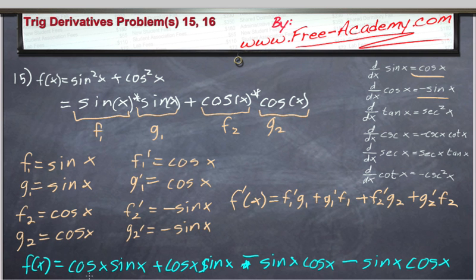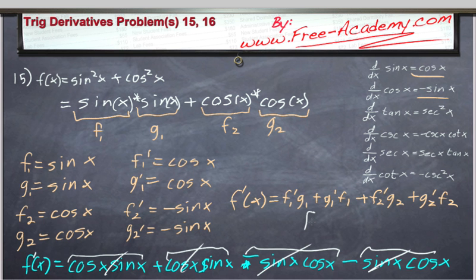Now take a look at what we have here. We have cosine x sine x minus sine x cosine x - those cancel. And then cosine x sine x minus sine x cosine x - those cancel too. So our derivative, f prime of x, is equal to zero.